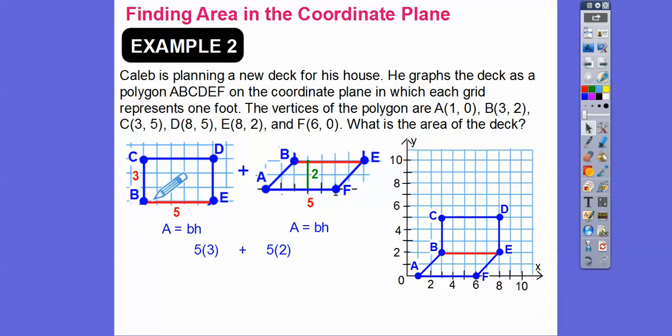So here's the base of the rectangle. Five squares and three squares is the height. And the parallelogram is also five squares base, but the height is only two squares. Can you see that? It's only going up two squares right there. So we just multiply those and then add them together. Don't forget, area is always in square units. So in this case, we've got to go look up here. It says each square represents a foot right there. So our answer is going to be 25 square feet.